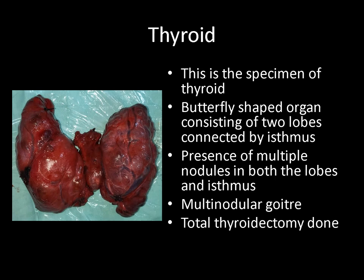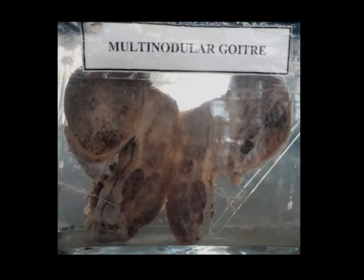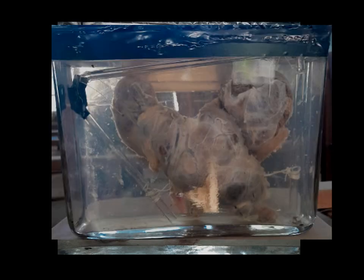Since the specimen consists of both the lobes and isthmus, this is a total thyroidectomy specimen. On the cut surface of the mounted specimen, areas of cystic regions as well as hemorrhages can be seen. The outer surface shows nodularity.